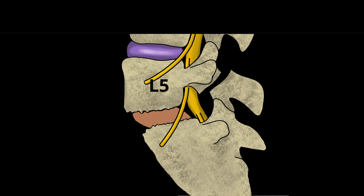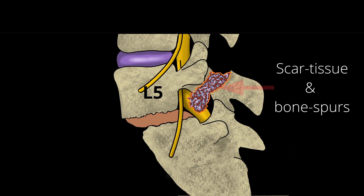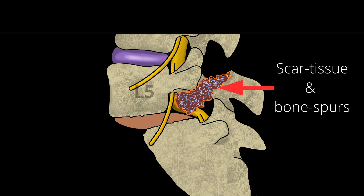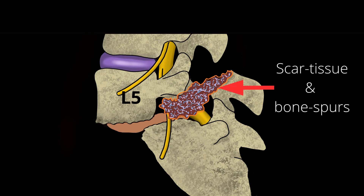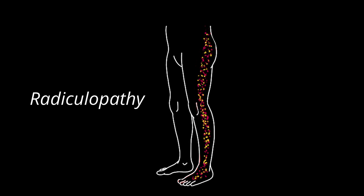As the slip increases, the scar tissue and bone spurs at the pars fracture site will gradually grow over time and can actually compress the L5 nerve, causing low back pain which can radiate into the buttock, thigh, and even the leg and the foot. This radiating nerve pain is called radiculopathy, what people commonly call sciatica.